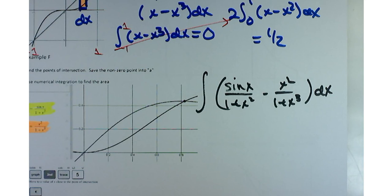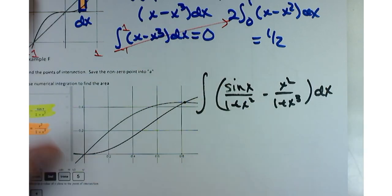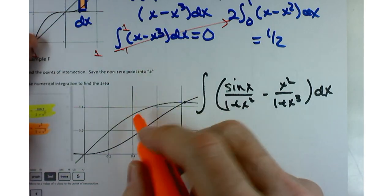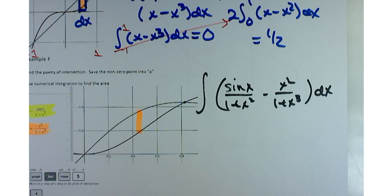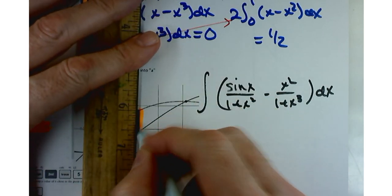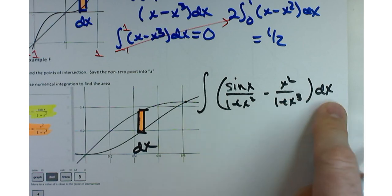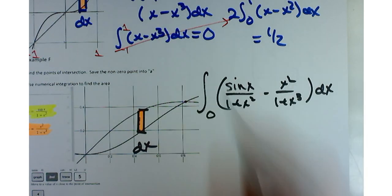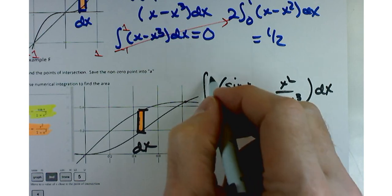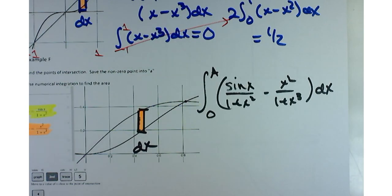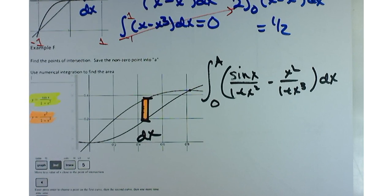Let's just do our top minus bottom function. That's going to be sine of x over 1 plus x squared minus x squared over 1 plus x cubed. And that's going to be a dx. But I'm going to run into a harder part here. What's going to be the hard part about a problem like this? Finding the intersection point. Getting this intersection point. I can see one of the intersection points. Where's the lower limit for my rectangle here? Zero. Let's draw in our little rectangle. The lower limit is zero, but the upper limit, don't know.